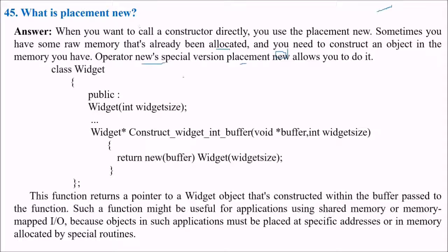Let me tell you again that when you want to call a constructor directly, we use this placement new. This is an example. We have a class. In this, you see, we have two constructor widget. This is a constructor. And this is a construct widget in buffer which takes some parameters and it returns new buffer side widget. It is returning what? This only.